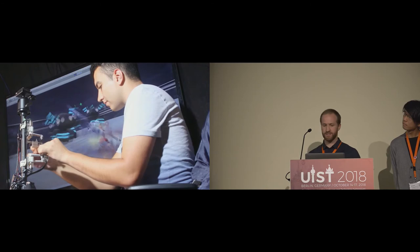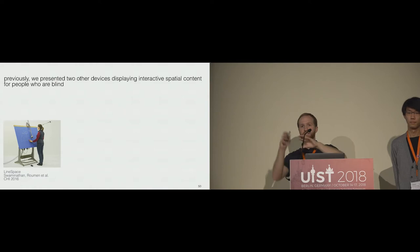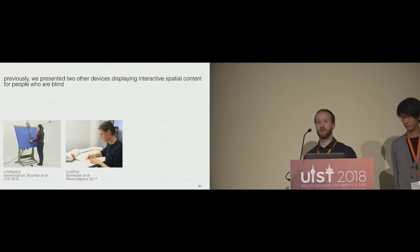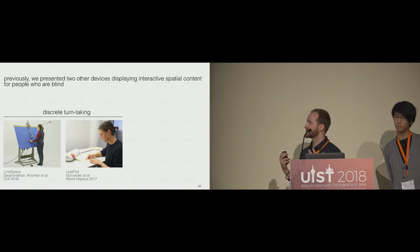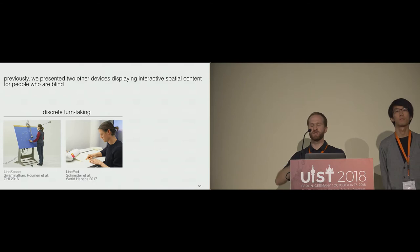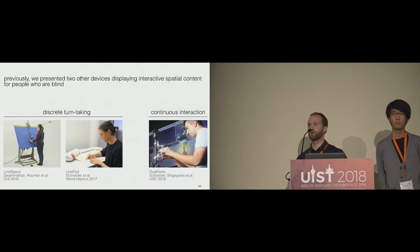Here's Edis defeating some zombie bunnies once again. Previously, we presented two other devices displaying interactive spatial content for people who are blind. At CHI 2016, we presented Line Space, which printed lines in a large area for tactile spatial content and dynamic audio interaction. Last year at World Haptics, we presented Line Pod, a mobile version allowing users to feel interactive spatial content with dynamic audio interaction. Those represented discrete turn-taking interaction — you had to move hands around to scan again. Dual Panto offers continuous interaction with push notification of when something changes spatially, which is what makes us so excited.